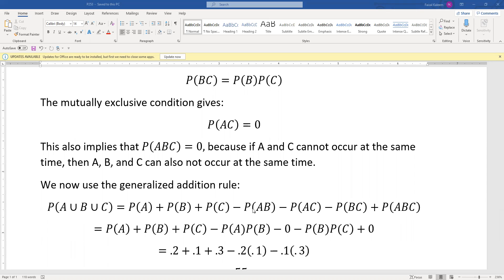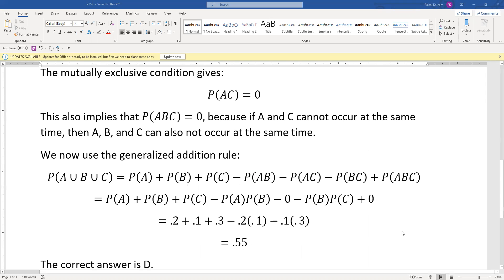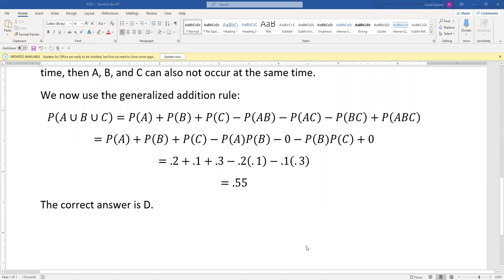We use the fact that P(AB) is P(A)P(B), P(AC) is zero, P(BC) is P(B)P(C), and P(ABC) is zero. We substitute the values of P(A), P(B), and P(C). P(A) was 0.2, P(B) was 0.1, P(C) was 0.3, and substitute them here and here as well. We end up with 0.55. That was choice D.